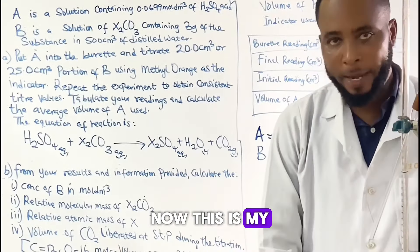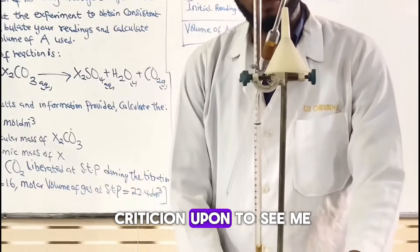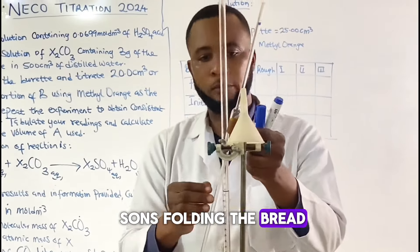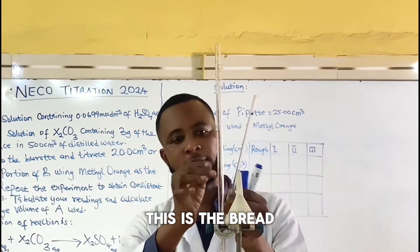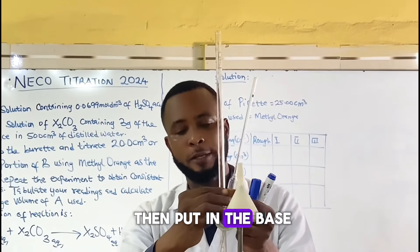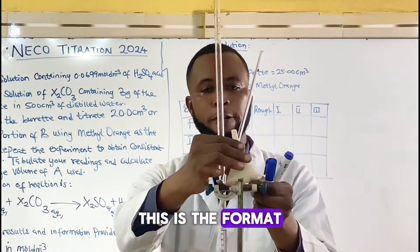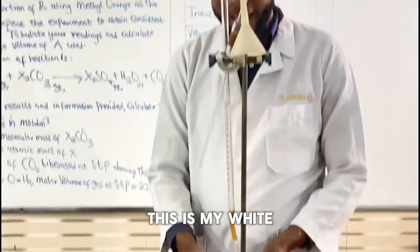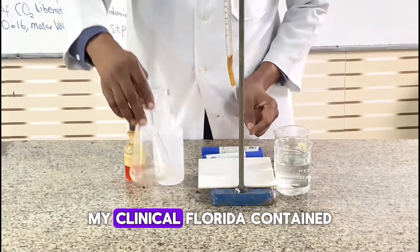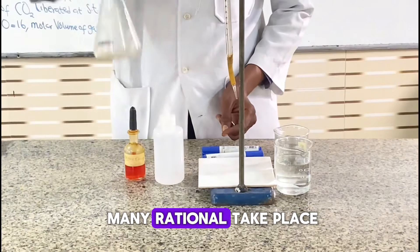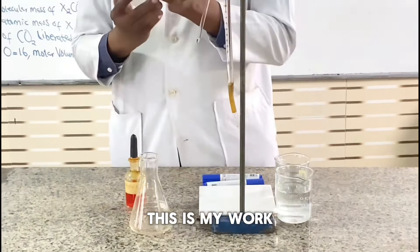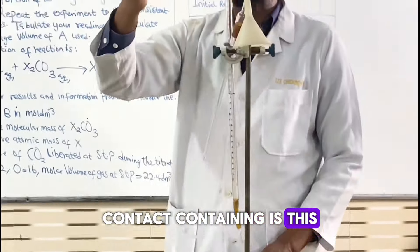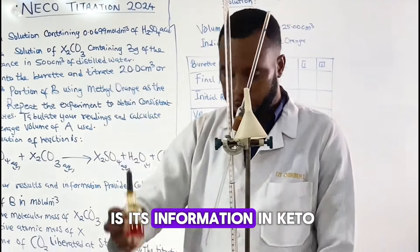This is my titration apparatus. I have the retort stand holding the burette. This is the burette. I have the funnel, which I'll use to transfer the liquids. This is my white tile to indicate the color change. My conical flask is where the reaction will take place. This is my wash bottle that will have the distilled water in it. This is a methyl orange indicator.